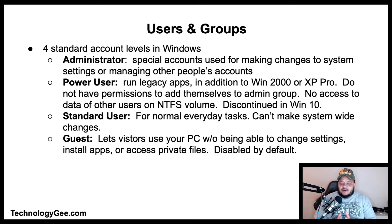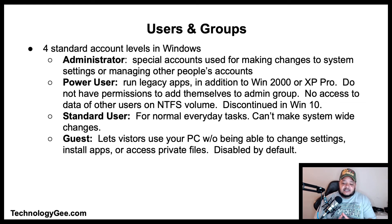Let's talk about users and groups. There are four standard account levels in Windows. The first is the Administrator — admin accounts are special accounts used for making changes to system settings or managing other people's accounts. They have full access to every setting on the computer. Next you have the Power User, who can run legacy applications in Windows 2000 or Windows XP Professional certified applications. Power users do not have permissions to add themselves to the admin group, nor do they have access to the data of other users on an NTFS volume.